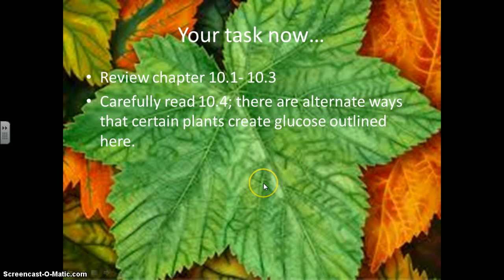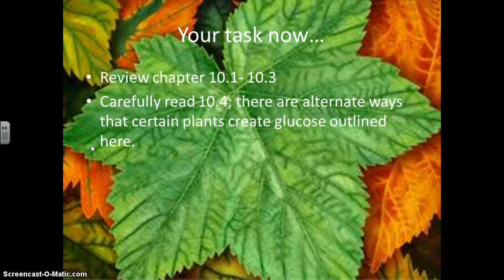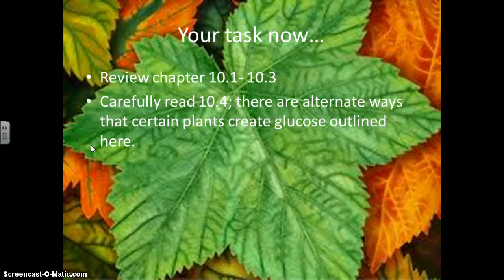So once you're done here, then you should be able to review chapter 10, sections 1 through 3. I've kind of summarized them here. And then what you need to do is carefully read 10.4. There's alternate ways that certain plants create glucose outlined, specifically C4 plants and CAM plants. Those will be additions to what you need to know. So hopefully I've summarized that all right for you. I know it goes quick, but please go back, pause it, watch it again, do what you can, and we'll have some work days in class as well.